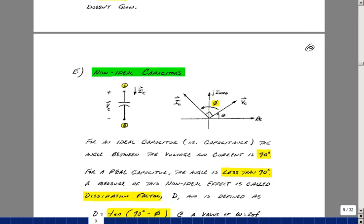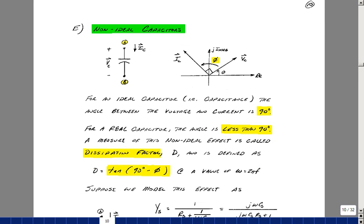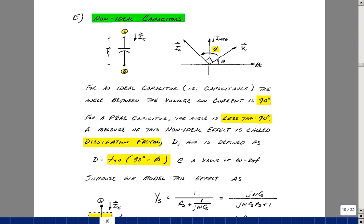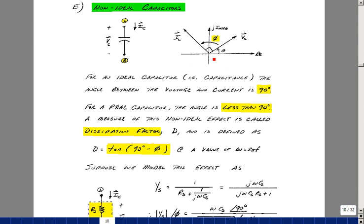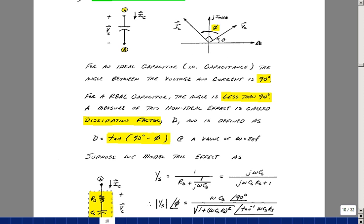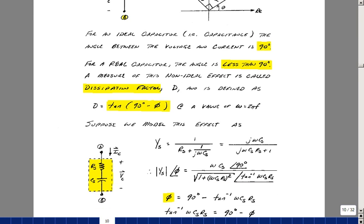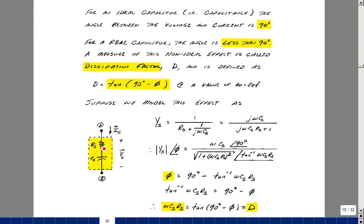As we saw in 203 lab, the non-ideal capacitor does play a role in some filter circuits, and what this RC circuit is doing is a type of a filtering. And so again, we're going to see the effects of dissipation factor in our results in lab. If you had an ideal capacitor, the angle between voltage and current would be 90 degrees. For a non-ideal capacitor, it's a little bit less than 90 degrees, and manufacturers describe a dissipation factor in terms of the tangent of 90 degrees minus this angle. So ideally, if this was 90 degrees, then the dissipation factor would be zero.